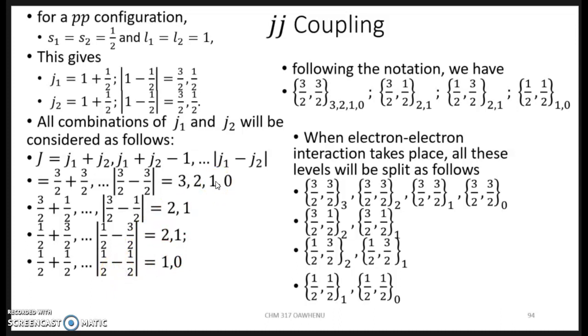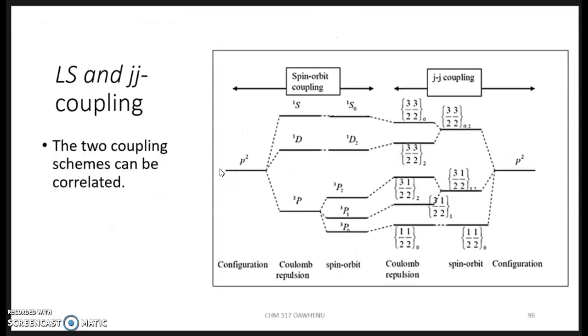If you look at the LS and JJ coupling on a diagram by Hansel, for the 3P term with P2 configuration, these are the terms arising for the LS coupling and these are the terms arising for JJ coupling. We can look at these two different configurations because remember we say that LS coupling is for lighter atoms and JJ coupling is for heavier atoms.